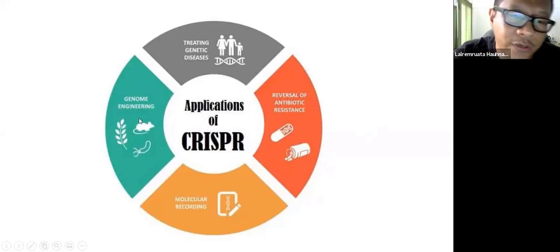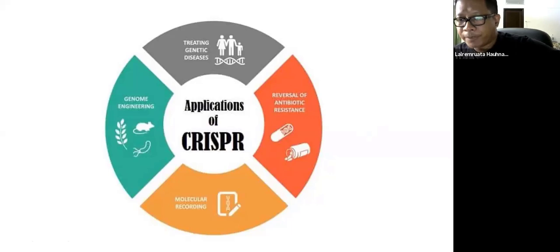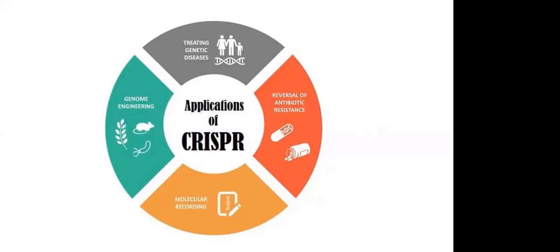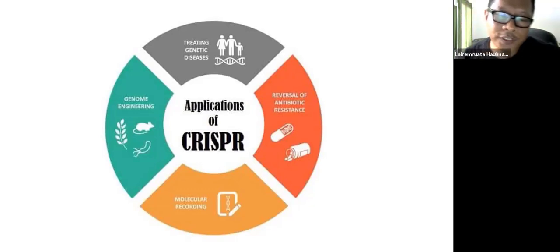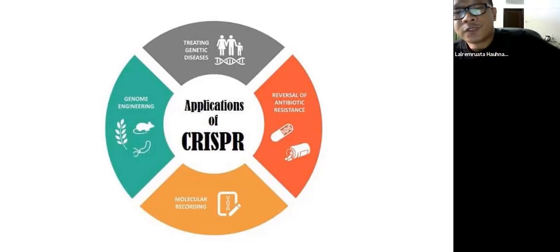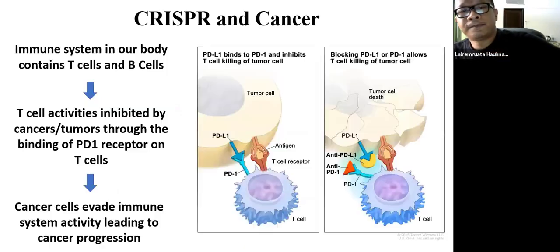CRISPR can also be used in genome engineering, where you change the genome of a certain species for the betterment of mankind — like wheat or rice, which could be engineered to become drought-resistant and give higher yields. There is also molecular recording using molecular phylogeny. Today I'll be talking about CRISPR applications in cancer, antibiotic resistance, and genome engineering.